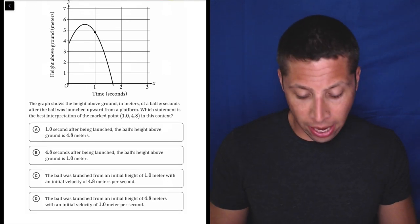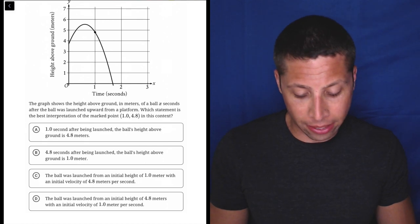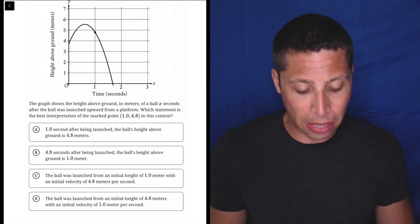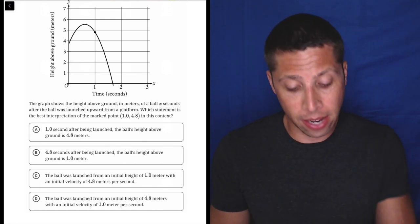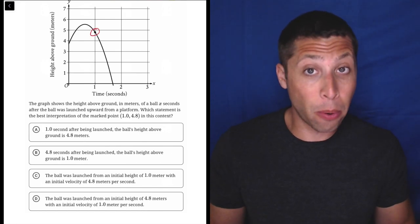Just kind of follow what it says. It shows the height above ground in meters of a ball X seconds after the ball was launched upward from a platform. Which statement is best interpretation of the marked point (1, 4.8) in this context? So there it is. It's just a random point.